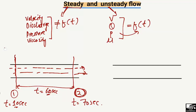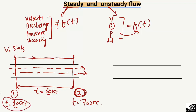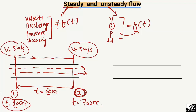If the velocity of the fluid at T = 10 seconds is 5 meters per second, and after 60 seconds the velocity is still 5 meters per second — there is no change in the property with respect to time. So we say this type of flow is known as steady flow in this pipe.